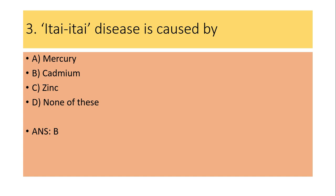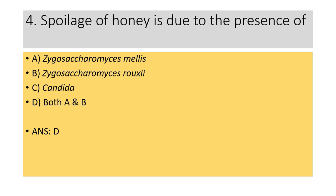Fourth question: Spoilage of honey is due to the presence of — Zygosaccharomyces mellis, Zygosaccharomyces rouxii, Candida, or both A and B? Answer is D: Zygosaccharomyces mellis and Zygosaccharomyces rouxii.